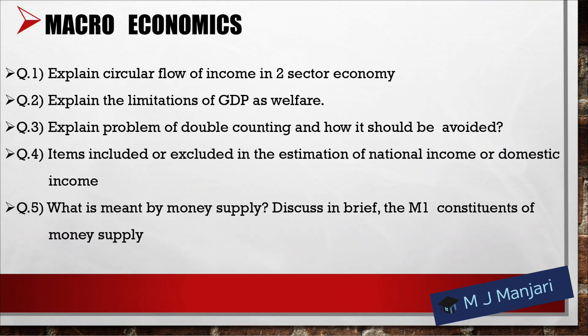Question 1: Explain circular flow of income in two sector economy. Question 2: Explain the limitation of GDP as welfare. Question 3: Explain problem of double counting and how it should be avoided. Question 4: Items included or excluded in the estimation of national income or domestic income.